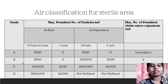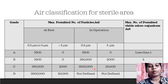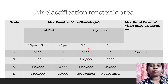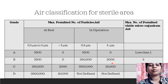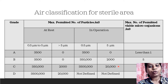For Grade B, which serves as the background for Grade A, it has similar conditions at rest, but in operation the maximum number of particles permitted differs. For 0.5 micrometer particles, 350,000 are permitted, and more than 5 micrometer particles are permitted up to 2000. The number of viable microorganisms permitted is 5.